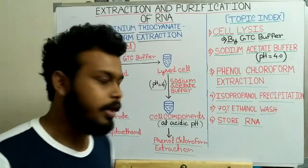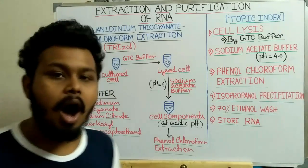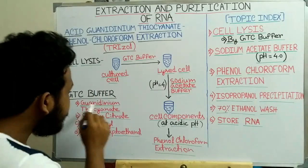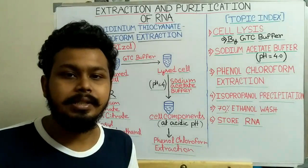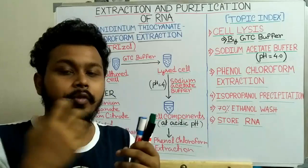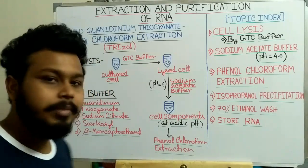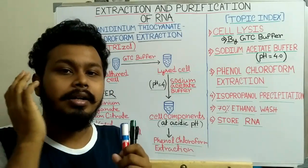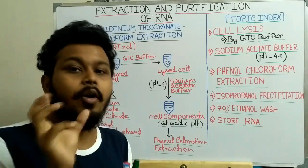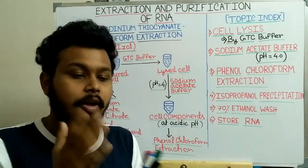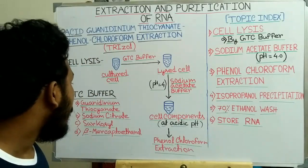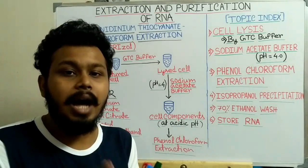How does guanidinium thiocyanate lyse the cell and inhibit RNase activity? Guanidinium thiocyanate acts as a chaotropic agent which disrupts hydrogen bonding. Since all proteins require hydrogen bonds for their native structure, guanidinium thiocyanate disrupts them, causing proteins to lose their native structure. This includes membrane proteins and RNases, which are also proteins.